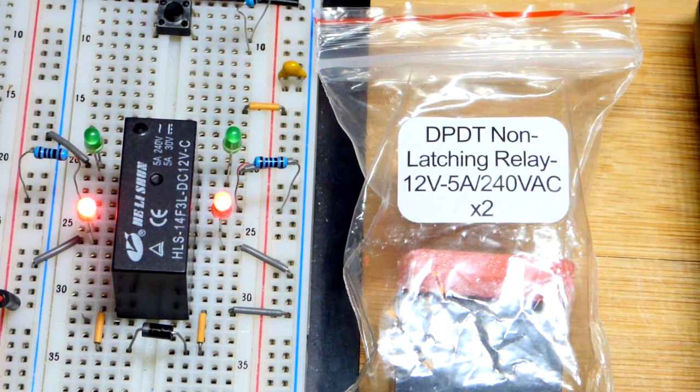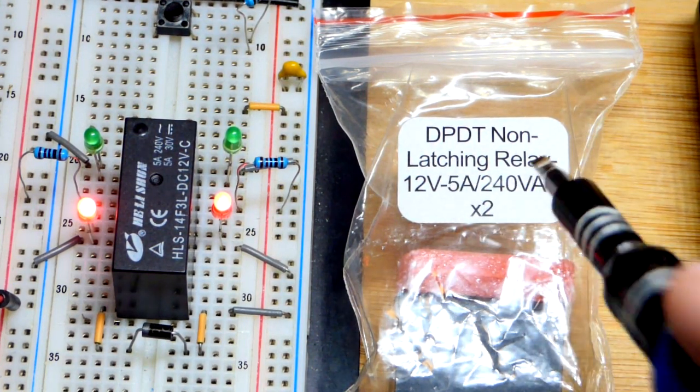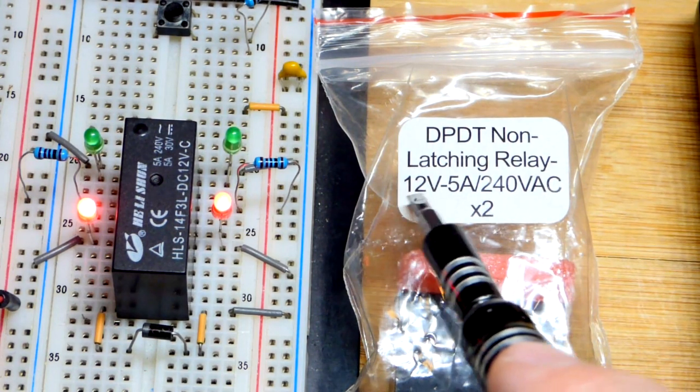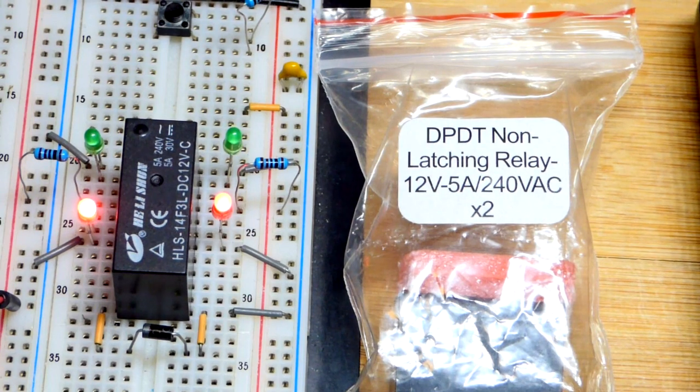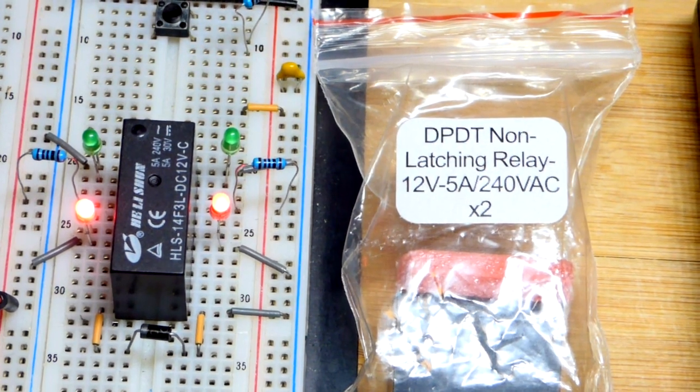This one we have to keep applying power. Now it is 12 volts - that is for the coil. If you see the specs written like that, that's what it means.